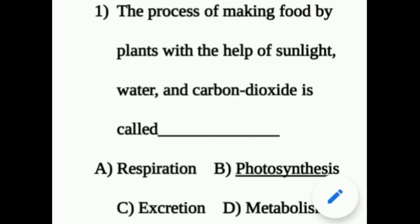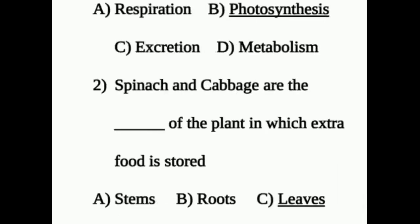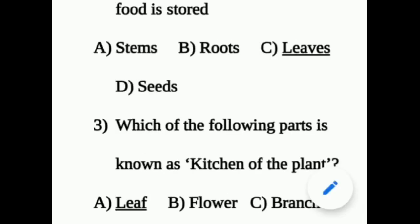Roman I: Choose the correct answer. Question 1: The process of making food by plants with the help of sunlight, water and carbon dioxide is called — answer: photosynthesis. Question 2: Spinach and cabbage are the dash of the plant in which extra food is stored — answer: leaves.